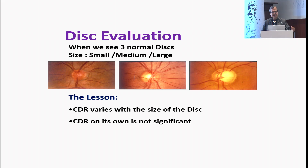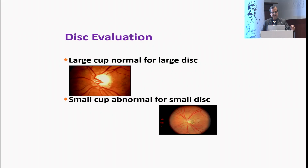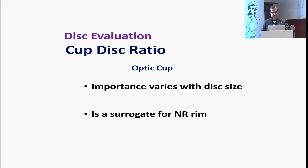The cupping is different in all three normal discs. The lesson: cup-disc ratio varies with the size of the disc, and cup-disc ratio on its own is not significant. A large cup can be normal for a large disc, and a small cup can be abnormal for a small disc. Importance varies with the disc size.